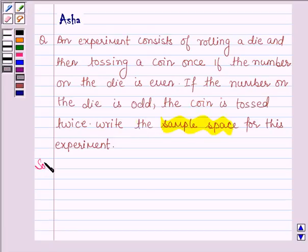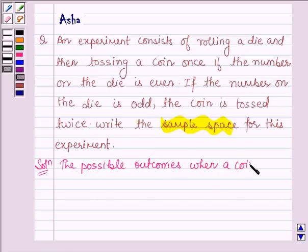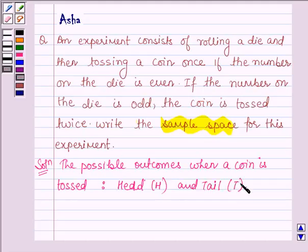Let's start with the solution. The possible outcomes when a coin is tossed are head, denoted by H, and tail, denoted by T.